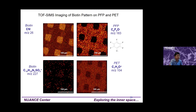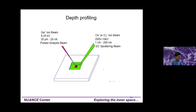Now about depth profiling. We use a gas sputter gun to make a crater, creating a new surface, and then use the primary ion analysis gun to analyze that surface. The sputter area must be much bigger than the analysis area, otherwise the analysis beam may be affected by the existing crater edge. So the gas gun creates the crater and the primary ion gun analyzes.